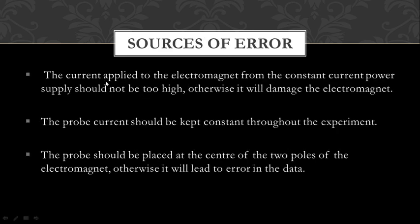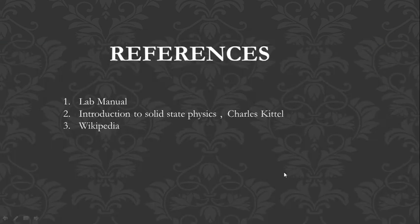Sources of error: the current applied to the electromagnet should not be too high, otherwise it will damage the electromagnet. The probe current should be kept constant throughout the experiment. The probe should be placed at the center of the two poles of the electromagnet, otherwise it will lead to an error.